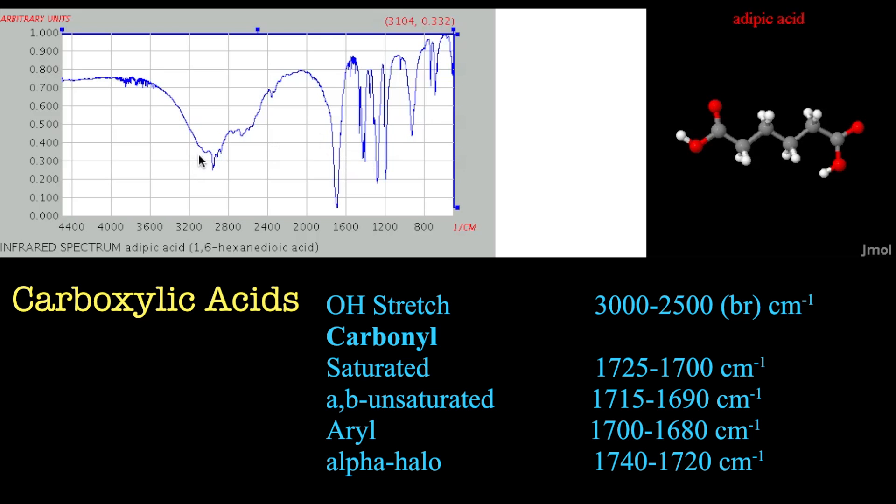Okay, so we have very broad signals here again. I mean this actually starts at 3600 all the way up to 2400, which is quite indicative of hydrogen bonded OH. It is very broad in this particular case.